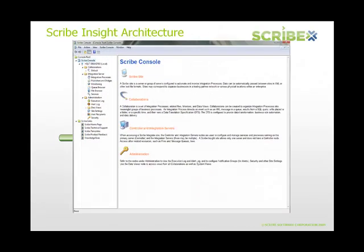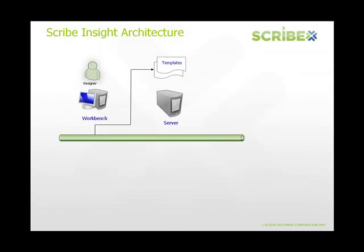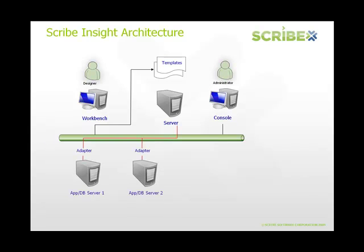The second point-and-click design environment within Scribe Insight is the console. This is where integration management parameters are defined and monitors and alerts can be set. The inherent ability of the Scribe console to manage multiple integrations across multiple applications at the same time makes Scribe Insight highly adaptable to any organization's integration needs.